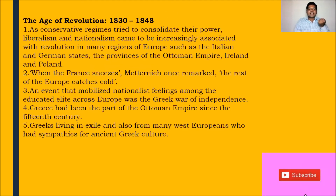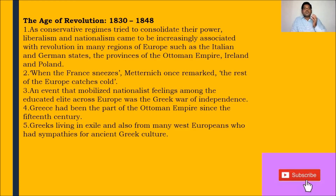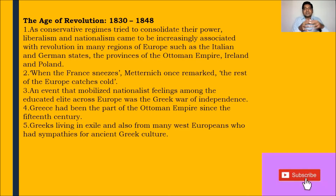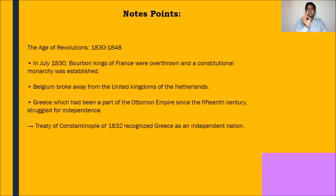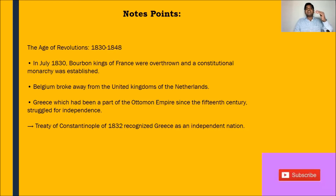The age of revolutions came because when conservatives tried to consolidate their power, the liberalistic approach and nationalism — sharing common culture, common identity, and a glorious past — came together and gave support to revolution by the people. Once the conservatives tried to suppress the people's sentiments, that bounced back in the form of revolutions across Italy, Germany, provinces of the Ottoman Empire, Ireland, and Poland.